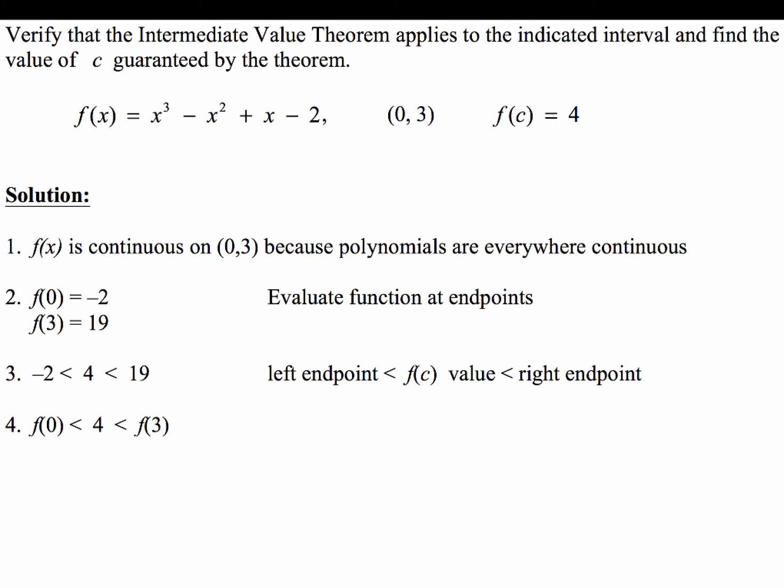Once you've got all that sorted out, our last step is to write our big closer, and this is what will get you another point: you'll state by the Intermediate Value Theorem, there exists a c in [0, 3] such that f(c) = 4. So that was the very first part. We verified that the IVT applies.